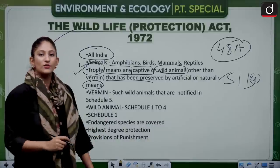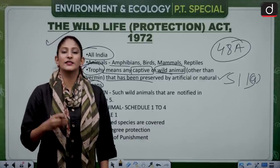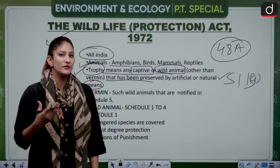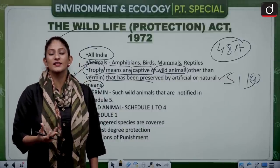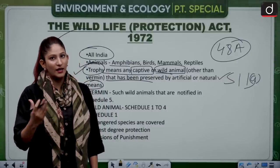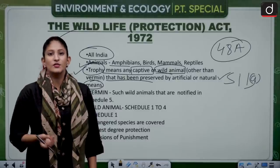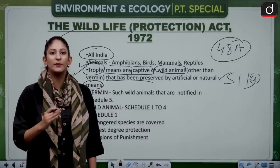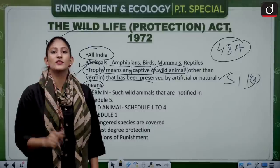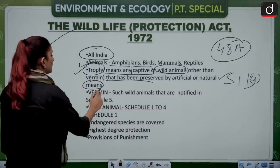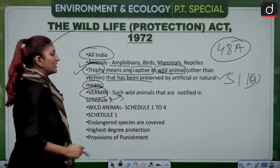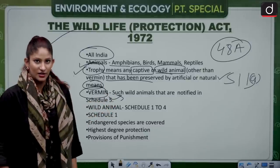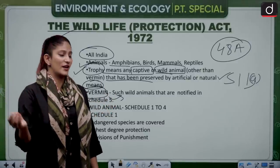A trophy can also include hunted animals, their fur, their skin used as decorative items. If you capture any tiger and keep it in a cage, that is also known as a trophy. Vermins are wild animals notified under Schedule 5. There are 6 schedules under the Wildlife Protection Act: Schedules 1 to 5 cover wildlife, and Schedule 6 is specific to plants.